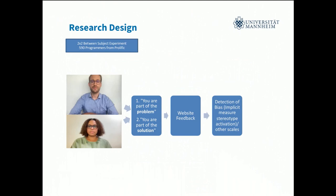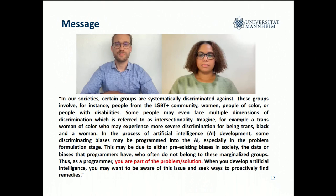We conducted an online experiment with 590 programmers on Prolific — a two-by-two between-subject design with white middle-aged programmers from the United States. We manipulated the race and gender of the speaker, as well as the problem framing. Both speakers read the same paragraph, which explains bias in AI and how vulnerable populations — LGBTQ people, people with disabilities, women, and people of color — tend to be most affected and not at the decision table. In one video condition, the message was 'you are part of the problem,' and in the other, 'you are part of the solution,' urging programmers to seek remedies to proactively address this issue.